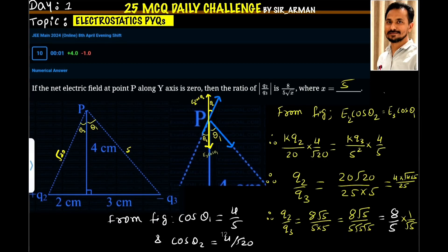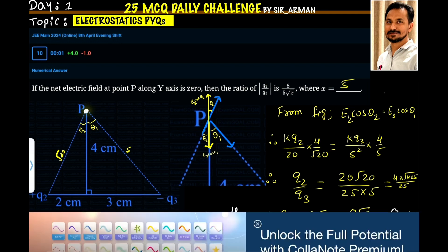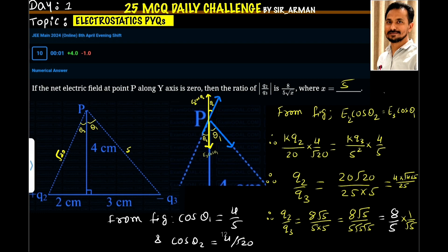If the net electric field at point P along the y-axis is 0, then the ratio of Q2 by Q3 is 8 by 5 root x, where x equals 5. Here, we have a point P and it is given that the electric field along the y-axis is 0 — there is no electric field. We have to find the value of x.